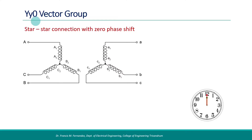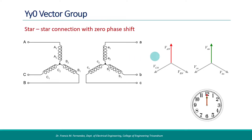The first type we are going to discuss is the YY0 vector group. It has a star-star connection — both primary and secondary windings are star connected. In the phasor diagram, the three voltage phasors are 120 degrees apart. The secondary winding voltages in all three phases are in phase with the corresponding primary voltages. The phase difference is zero and the clock position corresponding to that is zero hours — that is how we name this vector group as YY0.